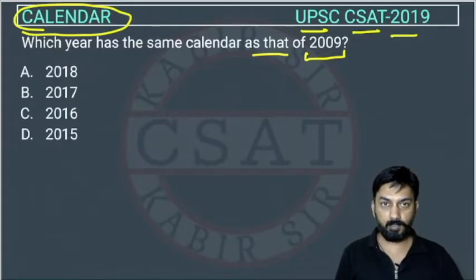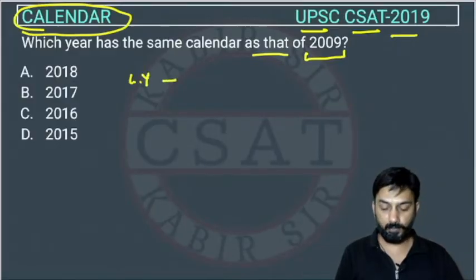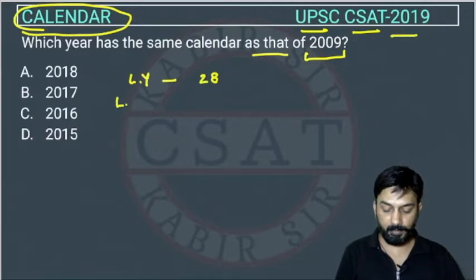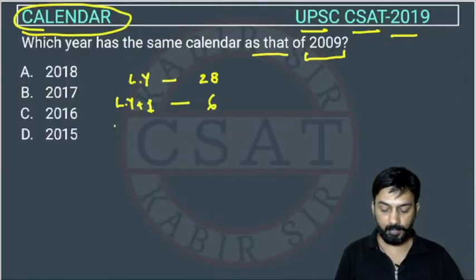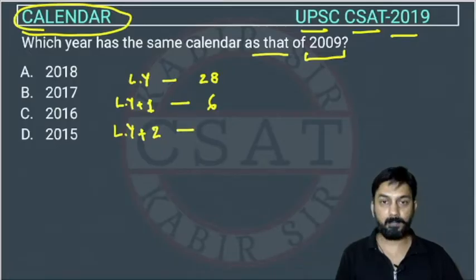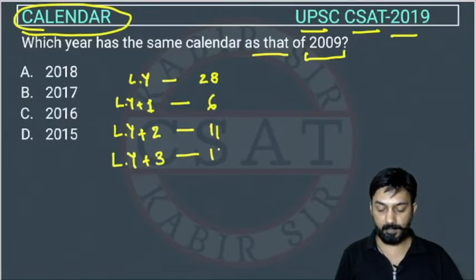If you remember one thing, you can solve this in just seconds. If a year is a leap year, the calendar repeats after 28 years. If it is leap year plus 1, the calendar repeats after 6 years. If it is leap year plus 2, the calendar repeats after 11 years. And if it is leap year plus 3, the calendar also repeats after 11 years.